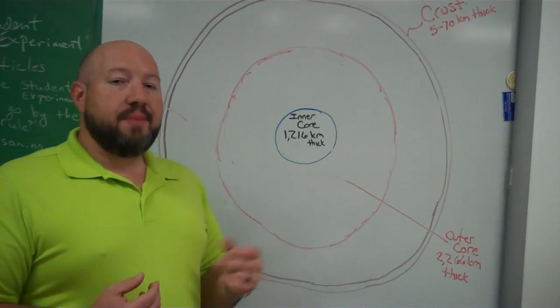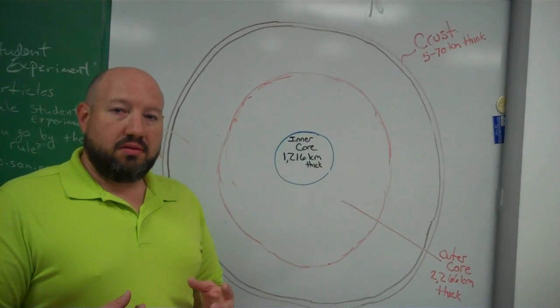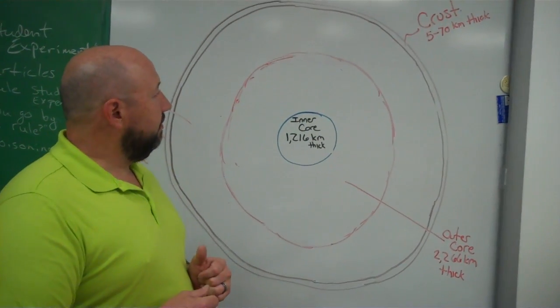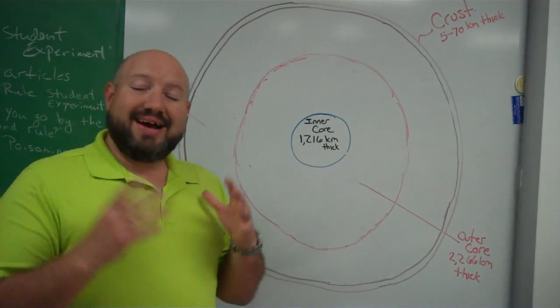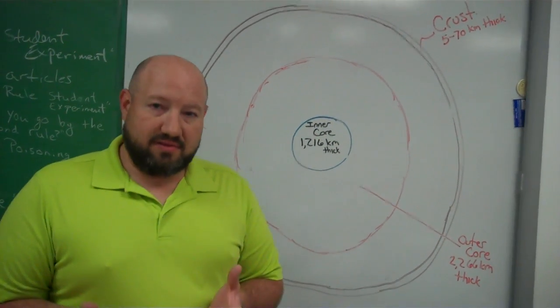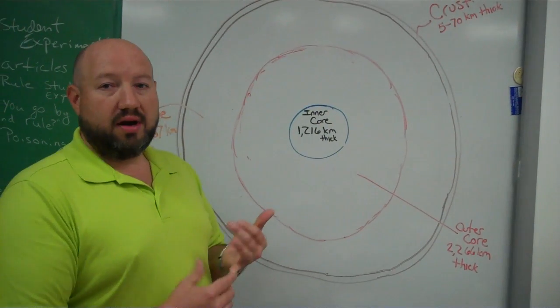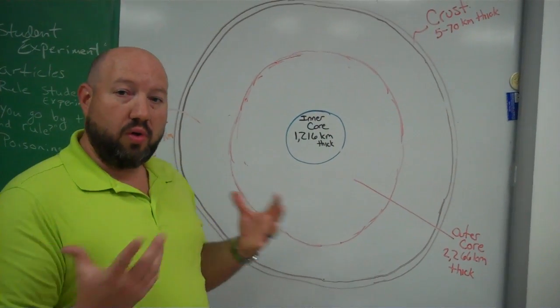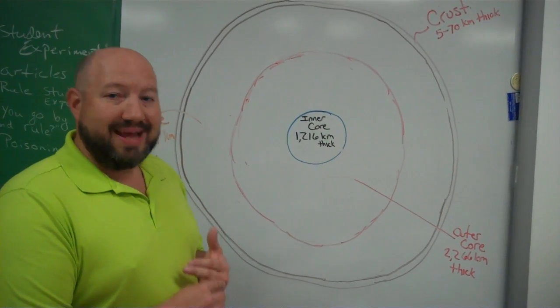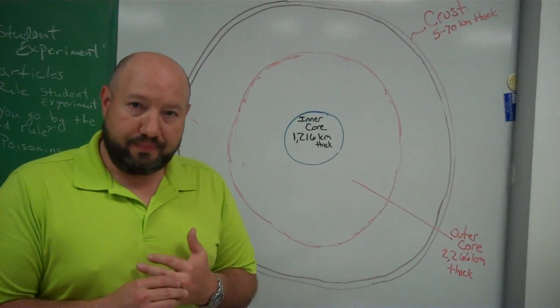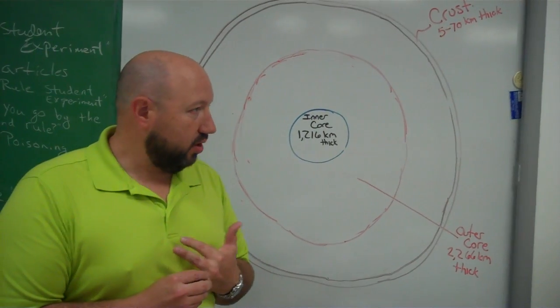There are two types of rocks that the crust is made up of. If it's on the continents — for example, North America, South America — the rock below those continents is granite.